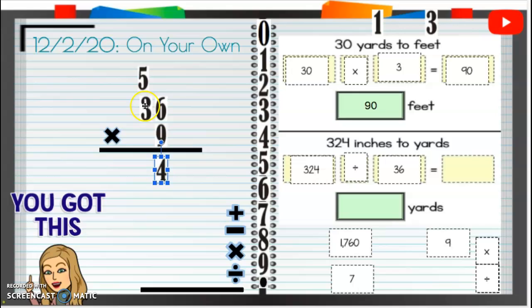9 times 3 is going to be 27. Plus 5 is going to be 27, 28, 29, 30, 31, 32. Woohoo!